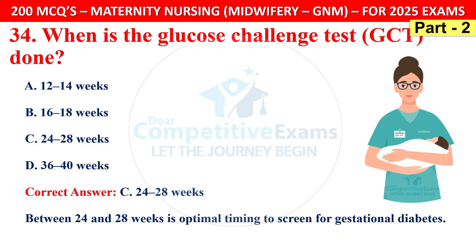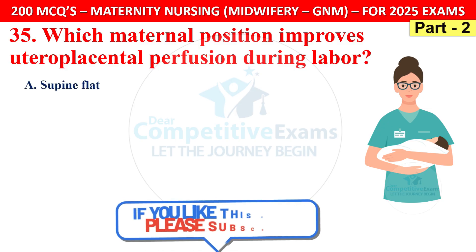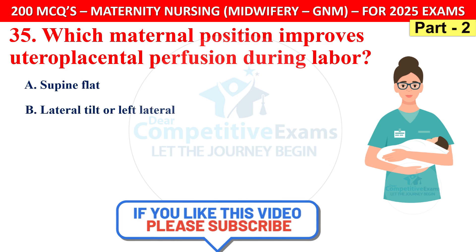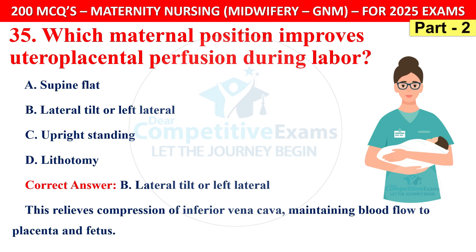Question 35: Which maternal position improves uteroplacental perfusion during labour? Options are supine flat, lateral tilt or left lateral, upright standing, or lithotomy. The correct answer is B — lateral tilt or left lateral. This relieves compression of the inferior vena cava, maintaining blood flow to the placenta and fetus.